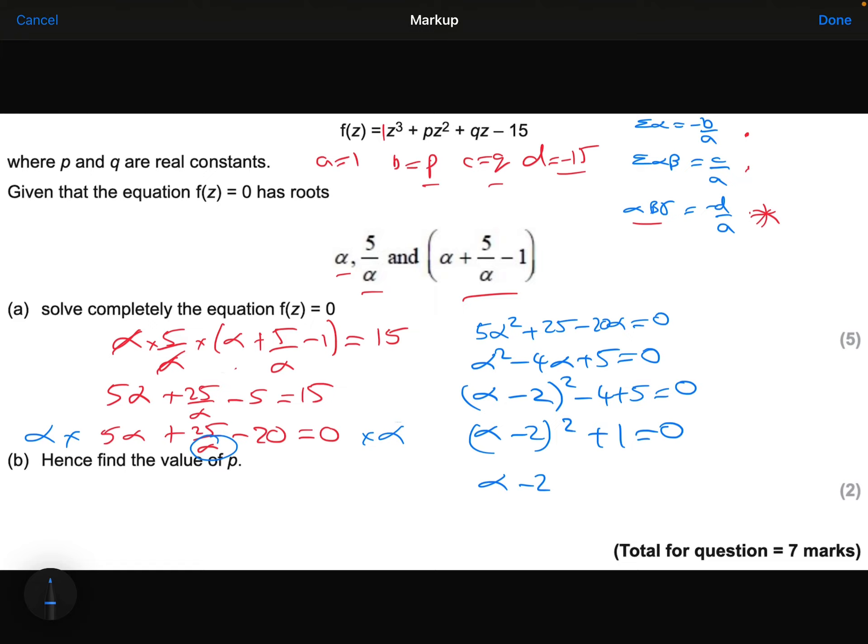So alpha minus 2 equals the square root of minus 1, plus or minus, which is i. Add the 2 to both sides, so I get alpha equals 2 plus or minus i. So these are two of my roots. Let me write these down up here. That's one root, here's another root. I need the third root now.